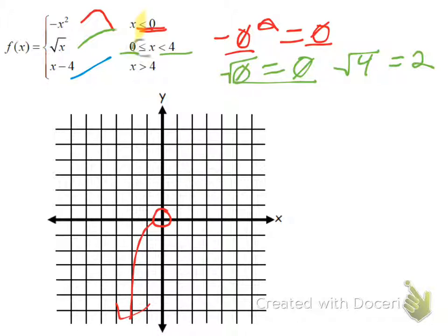Only the zero value is included. And I know that because it says less than or equal to zero. So one point I'm getting from here, it's zero, zero. I plugged in zero, I got zero. Another point is four, two, but this one is not included.